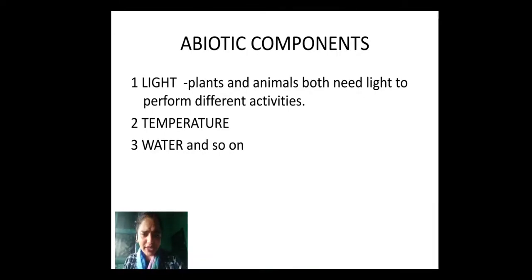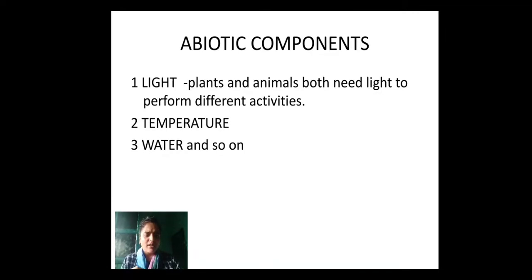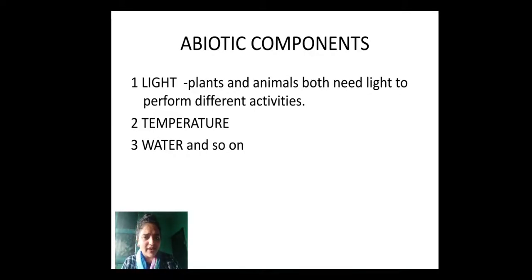One more example: we are so active during the daytime. Why do we perform a lot of work during the daytime? One of the factors is light — due to the presence of light, we are active during the daytime. One more example is the turning of plants towards the sunlight. So here, light is an abiotic factor and a plant is a biotic factor, and they are in interaction.